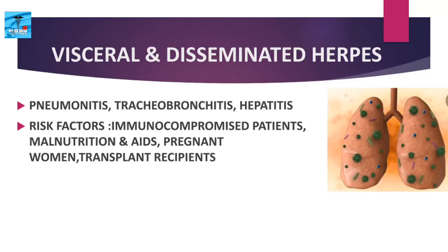In visceral and disseminated herpes, the common manifestations are pneumonitis, tracheobronchitis, and hepatitis. Risk factors include immunocompromised patients, malnutrition, AIDS, pregnant women, and transplant recipients.